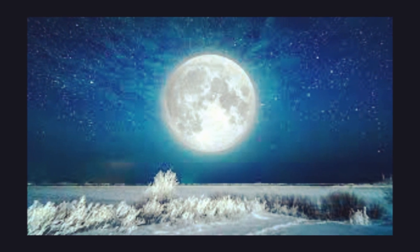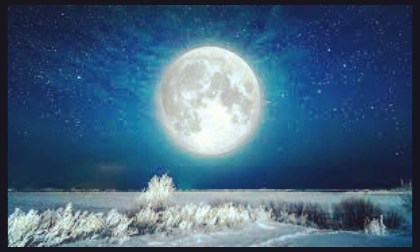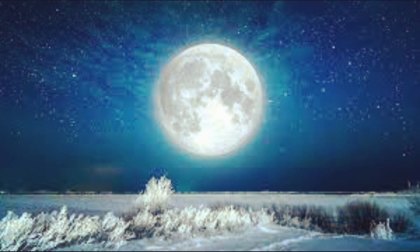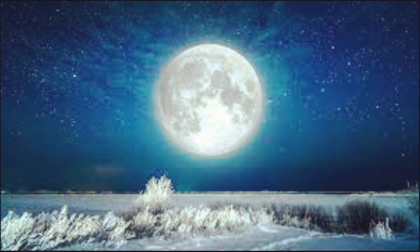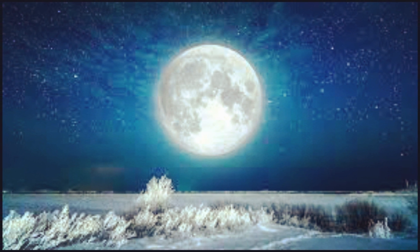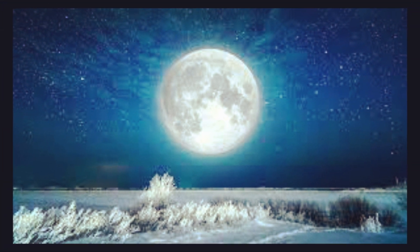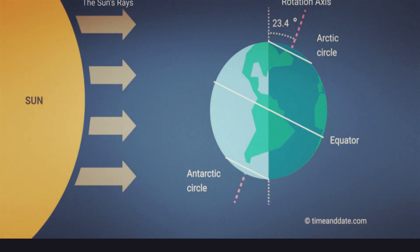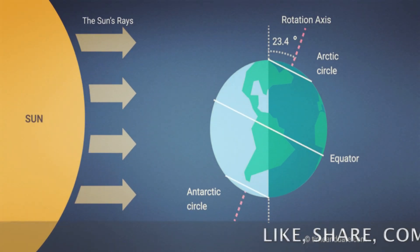It is also called the summer solstice and mid-winter, and once in June in the southern hemisphere, also called the June solstice. In the northern hemisphere, the day of the winter solstice is the shortest day of the year — the day with the least daylight and the longest night.